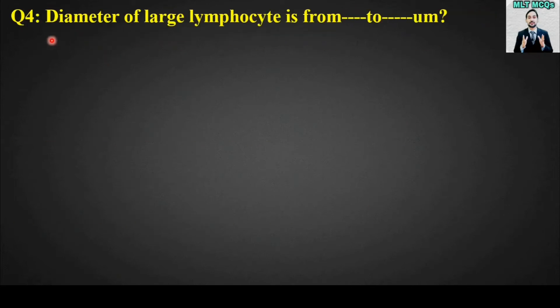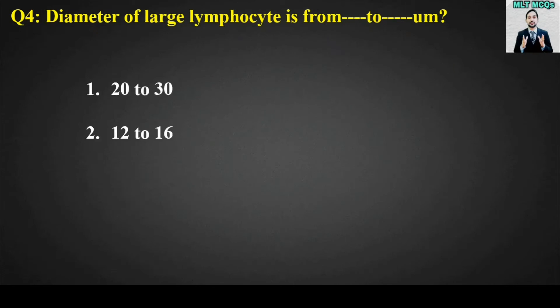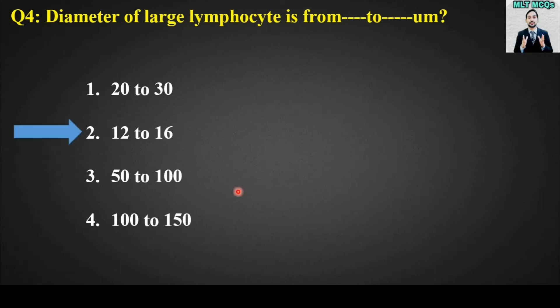MCQ number four: the diameter of a large lymphocyte is from blank to blank micrometers. Options are 20 to 30, 12 to 16, 50 to 100, or 100 to 150. The right option is option number two. Diameter of large lymphocyte is from 12 to 16 micrometers.